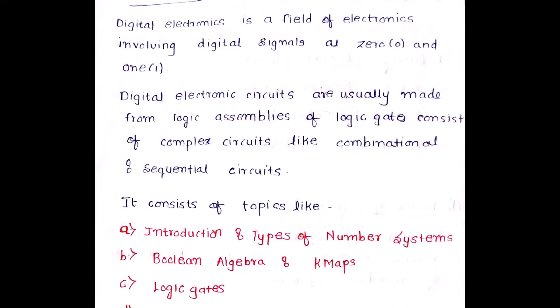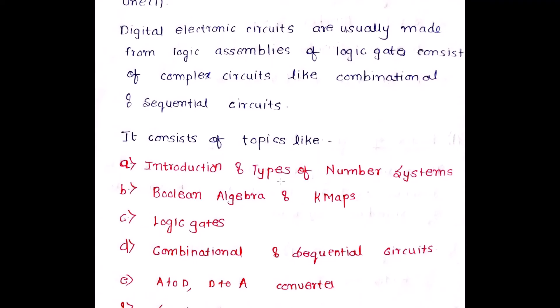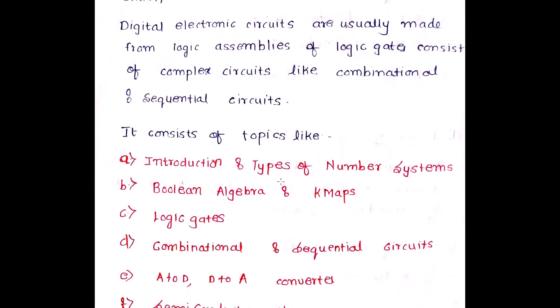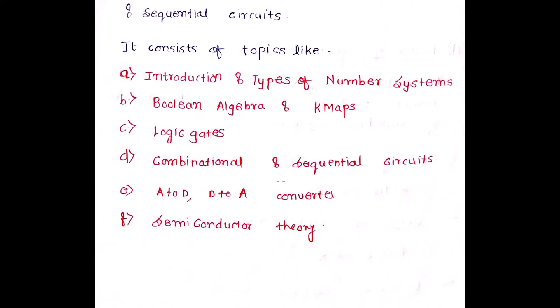Please make note of these topics well, because this is the basic of digital electronics and it has a lot of applications not only in this subject but also in others. Digital electronics circuits are usually made from assemblies of logic gates consisting of complex circuits like combinational and sequential circuits. We'll be learning these terms and different kinds of circuits in the future.